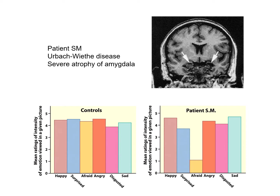Specifically, what is bad with patient SM is she was not able to tell when a person is showing the negative affect of fear from pictures of people's facial expressions. Controls were able to give an adequate range for happiness, surprise, fear, anger, disgust, and sadness — these six basic emotional scales when viewing pictures of facial expressions.